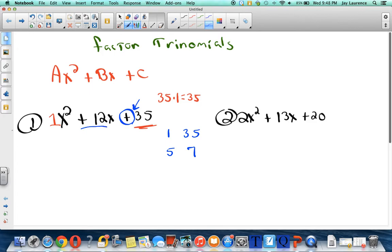I need two of these factors and I'm going to add them. How do I know what to add? Because the 35 is positive. If the 35 is positive, I'm going to add the two numbers together in hopes of getting what number? Well, I want to get a positive 12.